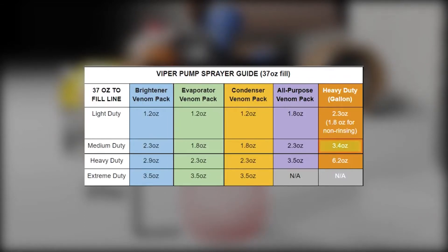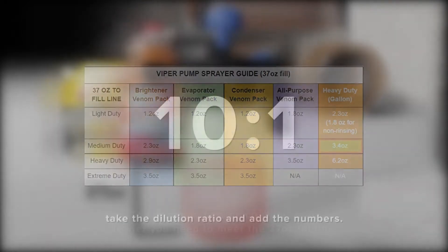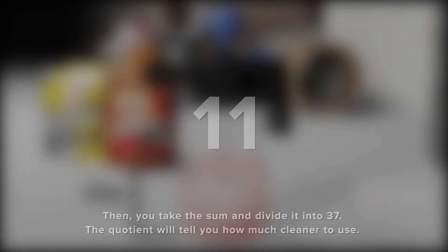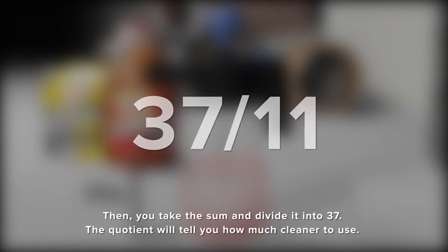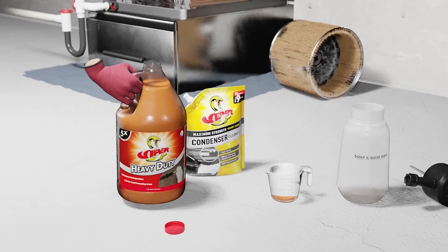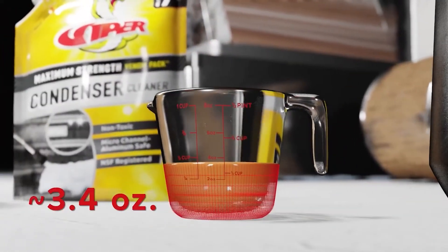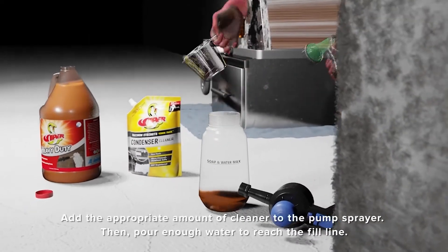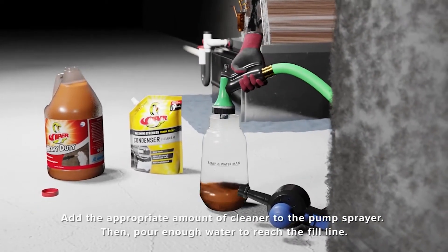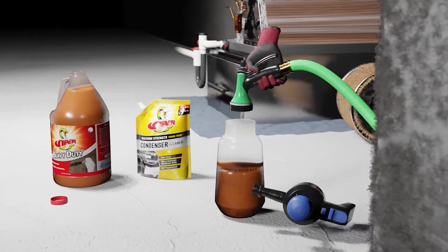In order to properly use a dilution ratio, you must first add the ratio numbers together and divide the sum into the pump sprayer fill volume, which is 37 ounces in this case. Dividing 37 by 11 gives us approximately 3.4 ounces, which is the total fill amount for the chemical.